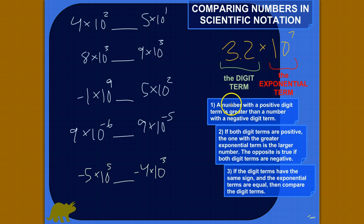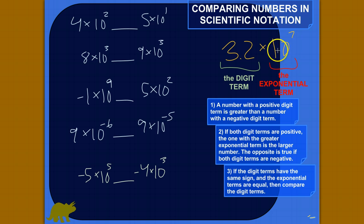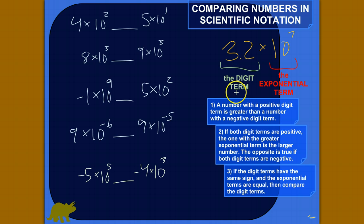The first rule involves the digit term. Let me back up and explain: this part of the number in scientific notation is called the digit term, and the part with the exponent is called the exponential term — the times 10 to the something. You might hear the digit term called the coefficient, but I'm going to call it the digit term.